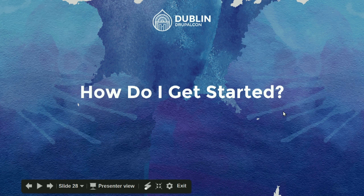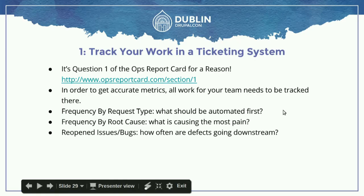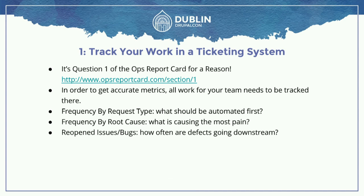Hopefully I've won you over on this stuff and you're asking: how do I get started? Six steps. I'm not going to say it's easy, but they're clear. The first thing you've got to do is track your work in a ticketing system. It's question one of the ops report card for a reason. If it isn't in a ticket, it doesn't exist. That's really important when starting this. All of your work has to be tracked in the ticketing system so you have a single place of information to query.